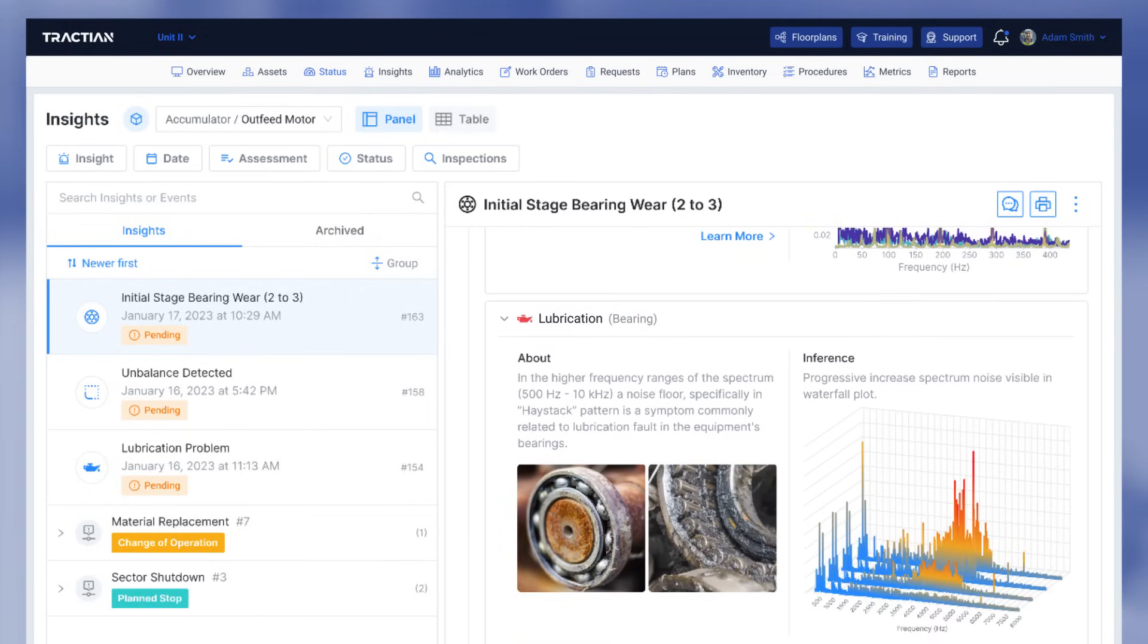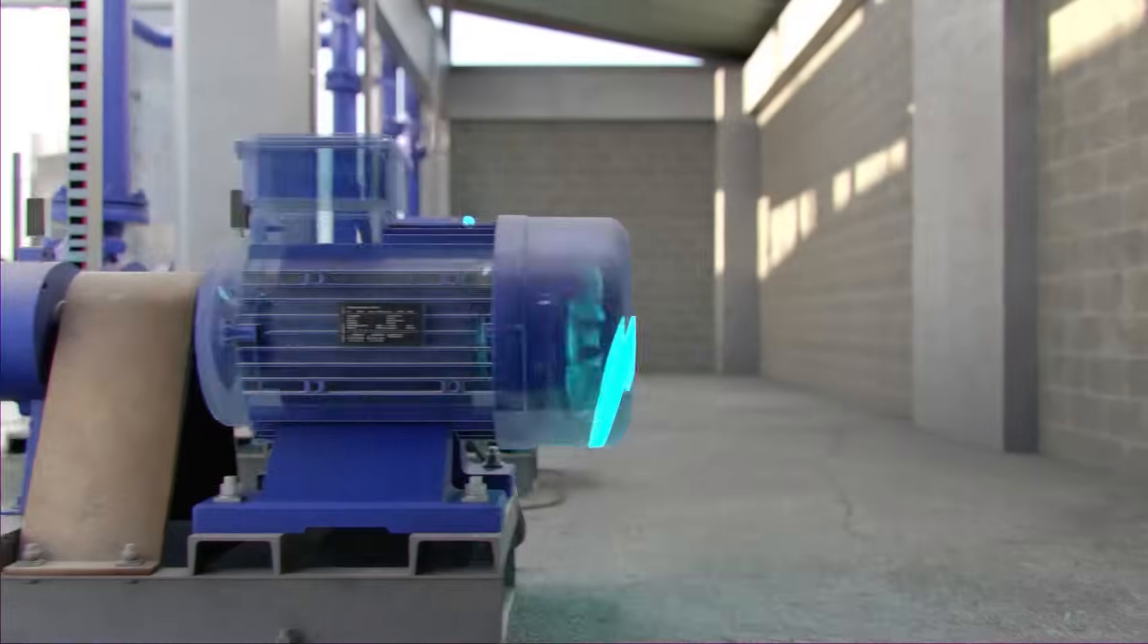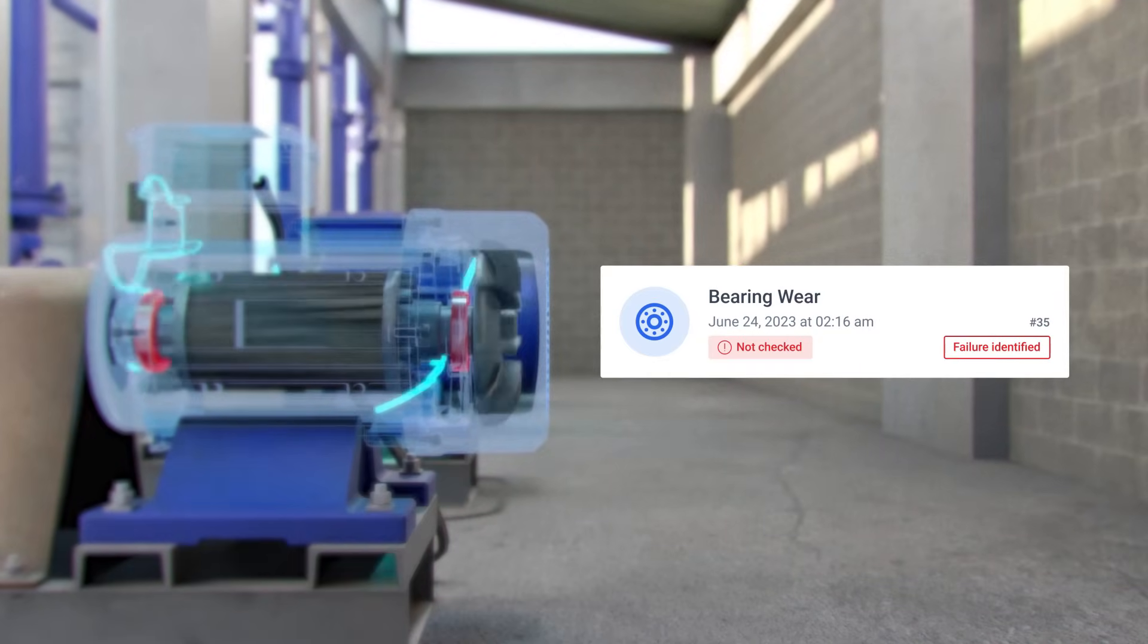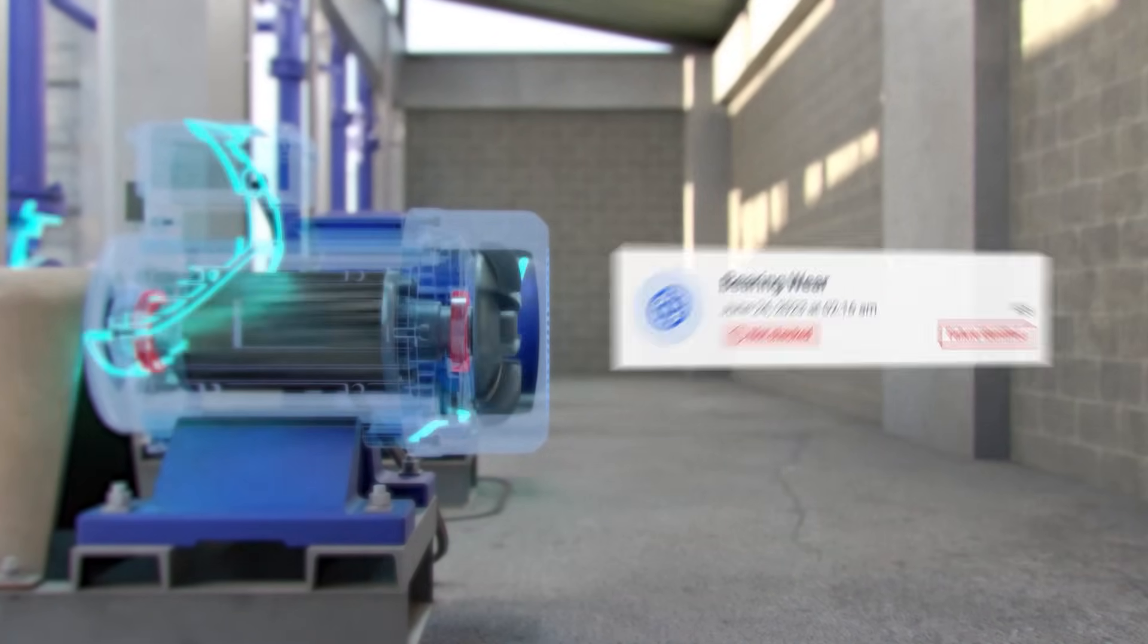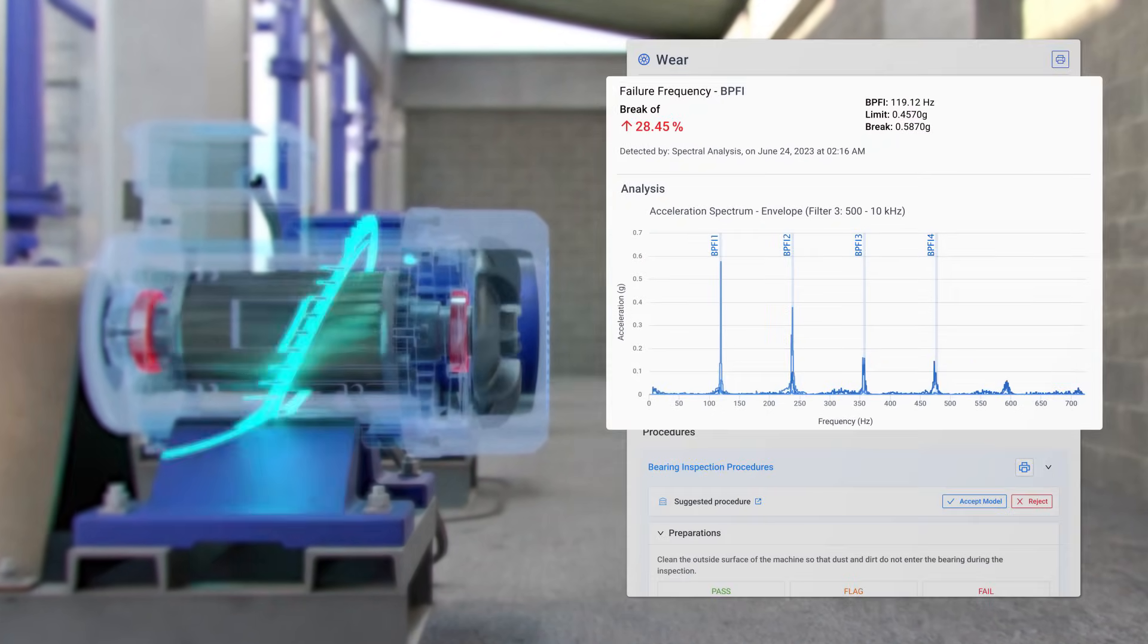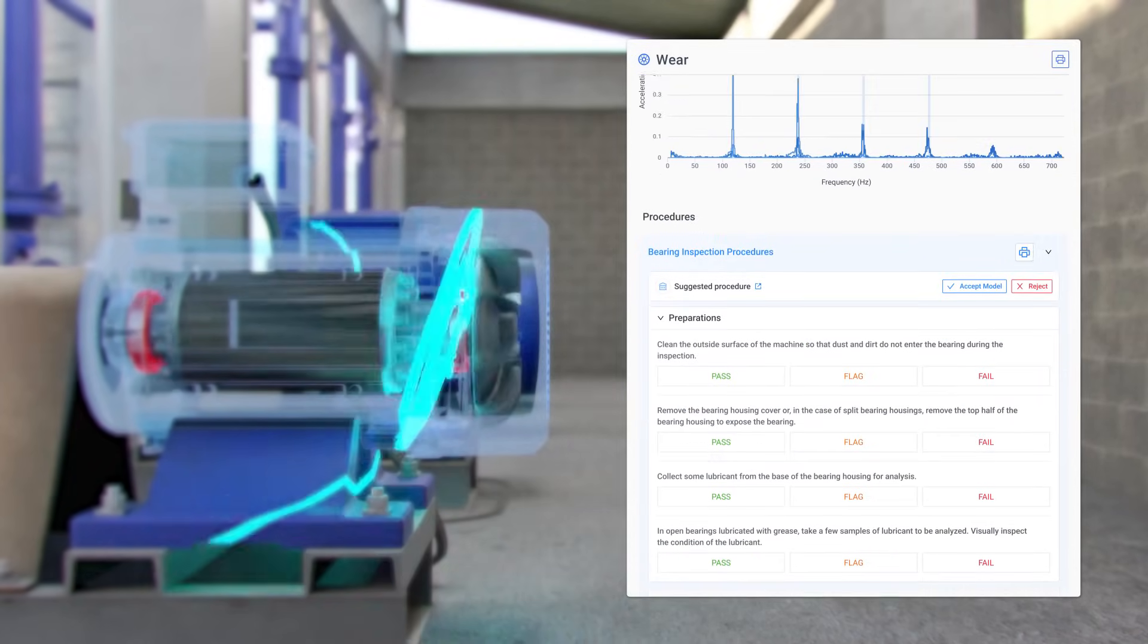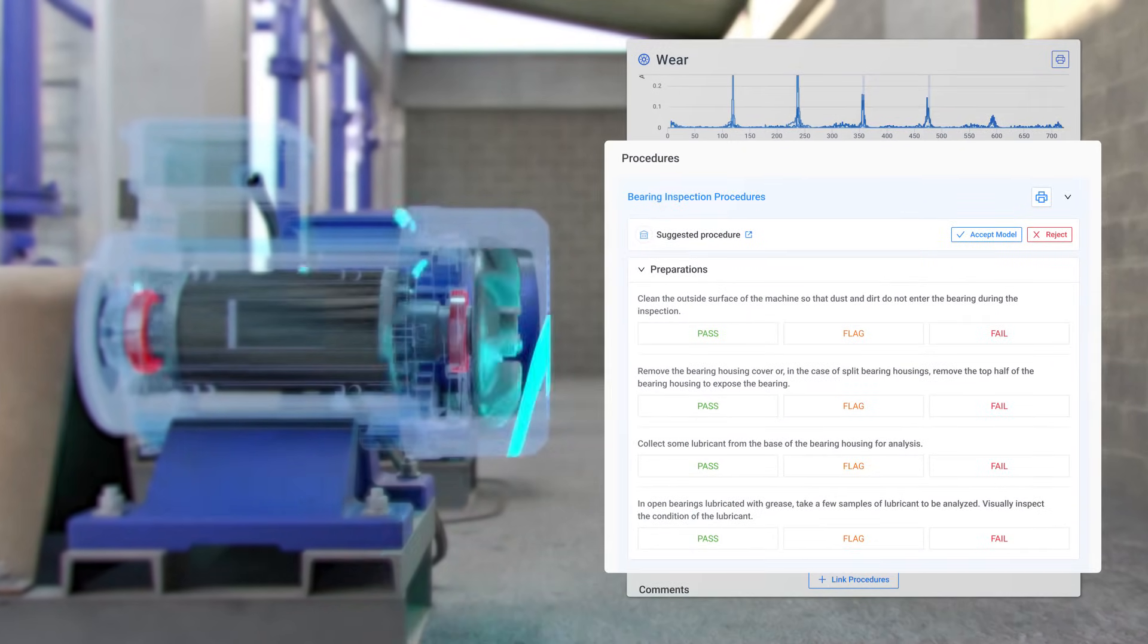If we get back to the bearing failure example we were discussing just before, you would get the specific identified fault, a behavior chart indicating failure severity, and prescriptive suggestions on what you can do to prevent this fault from escalating.